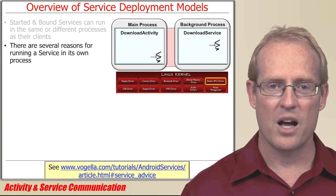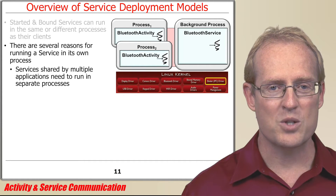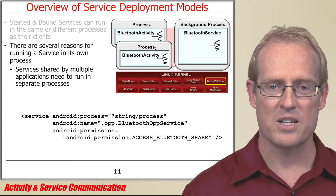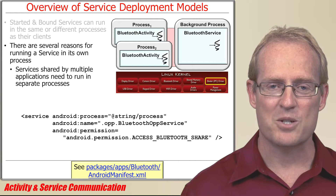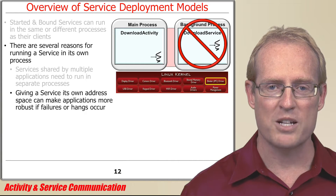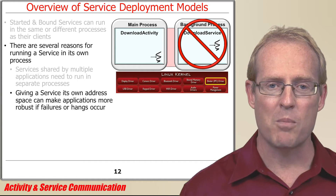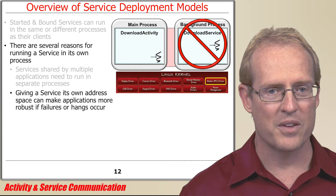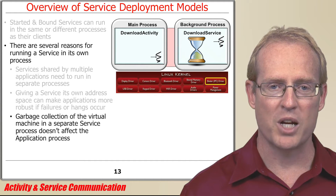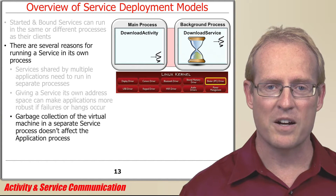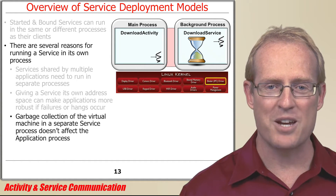For example, a service must run in its own process if it's shared by multiple applications, which is why the Android Bluetooth service runs in a separate process, as shown at this path name. Likewise, if a service running in its own process memory address space fails or hangs, the applications that use it may be more robust, assuming they're programmed defensively, of course. Moreover, if garbage collection occurs in the virtual machine of a service running in its own process, that won't affect other parts of the application running in other processes, which may make the application more responsive.